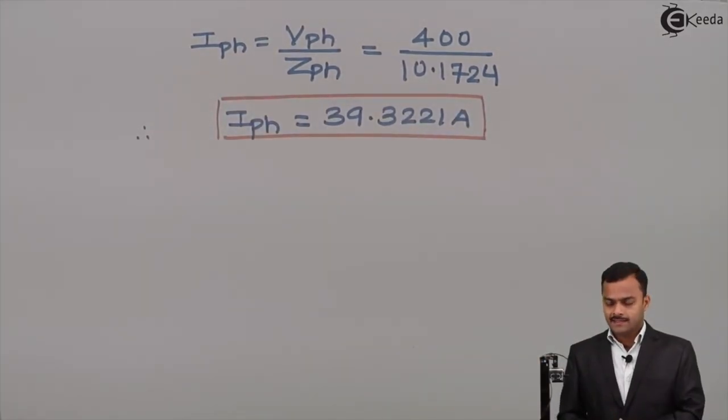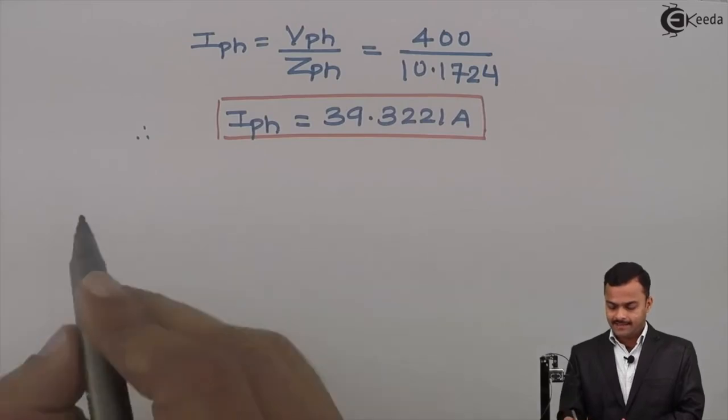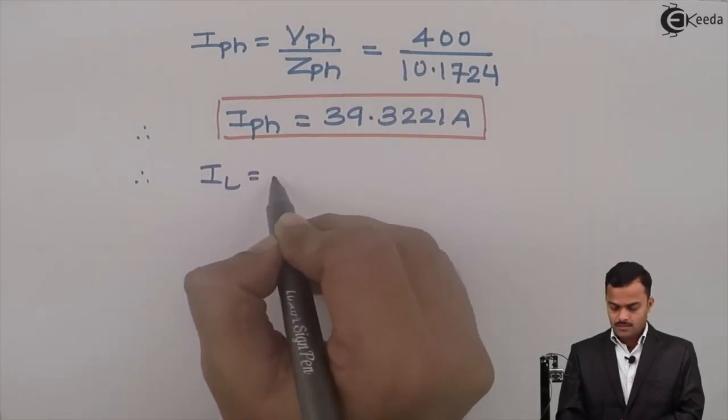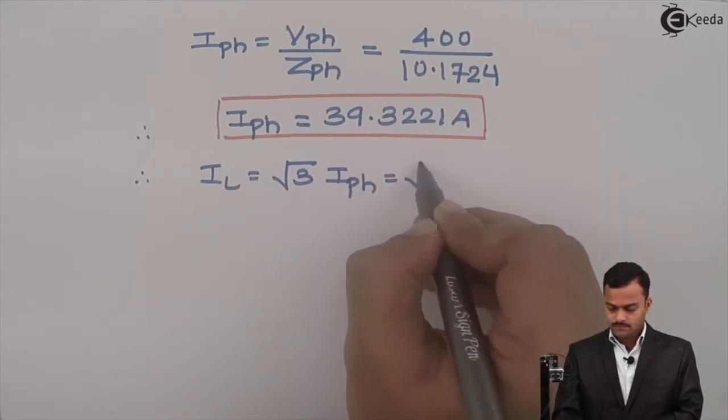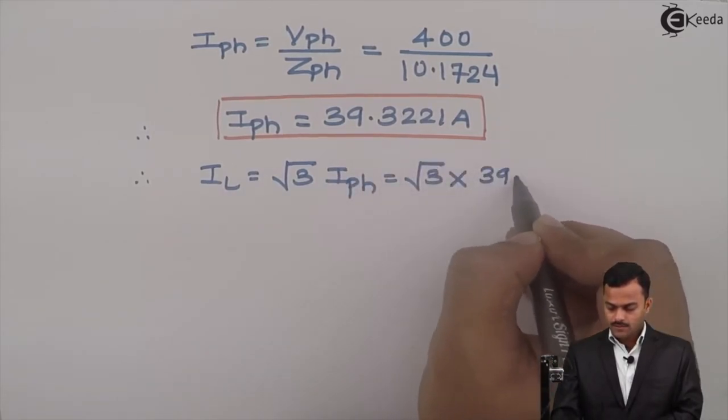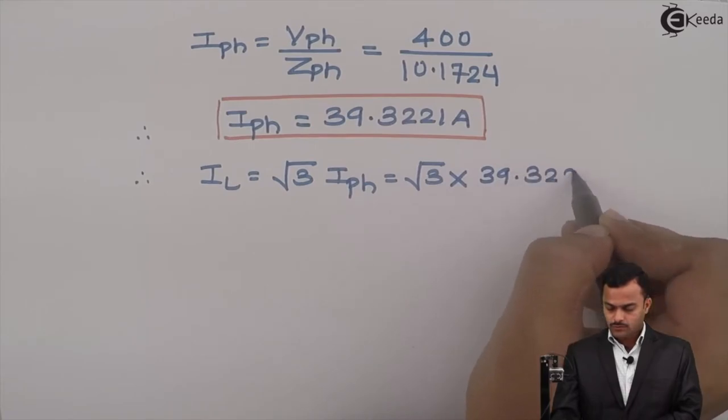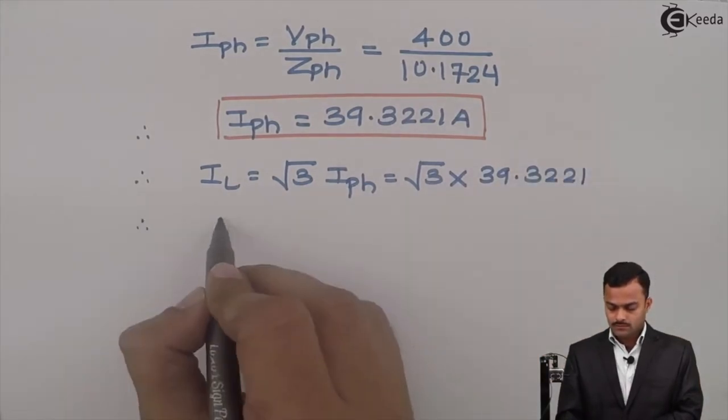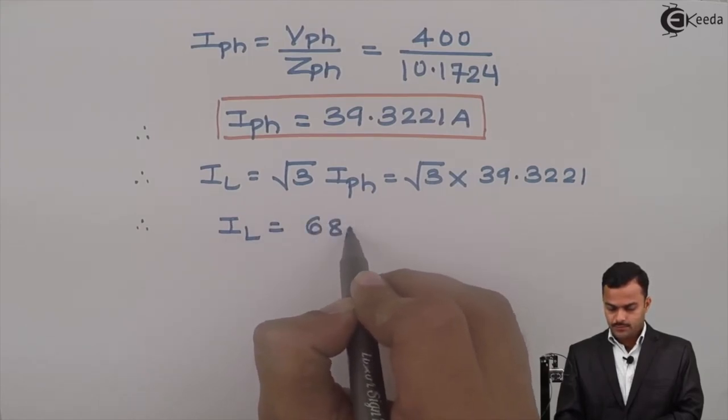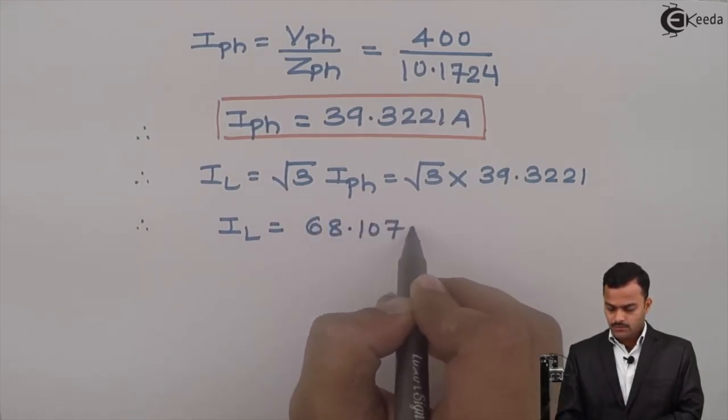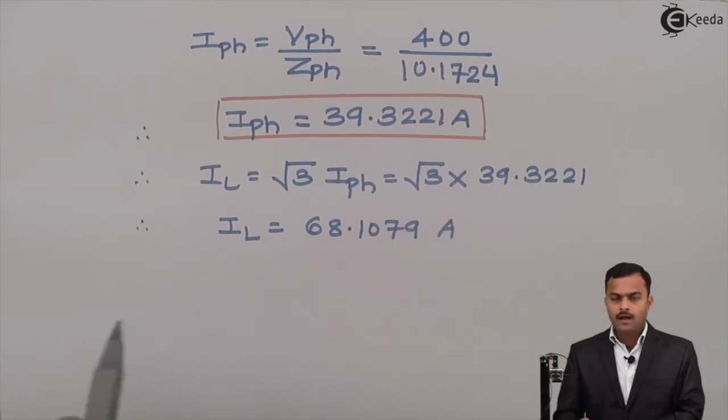Now it's a delta connected load, so line current is root 3 times phase current. Root 3 multiplied by 39.3221, so line current will be 68.1079 amperes.